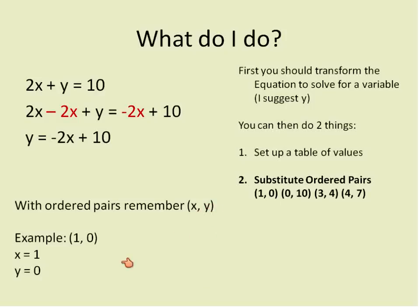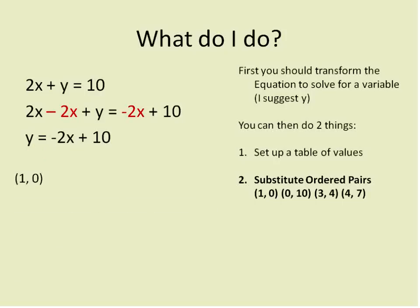And it's always written alphabetically. So x is 1, y is 0. That's the first ordered pair. 1, 0, x is 1, y is 0. So I'm going to take those values, x being 1 and y being 0, and I'm going to put them into this equation where I see an x and a y. It'll look like this. There's x and y. Here's my equation.